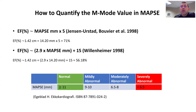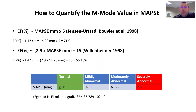Both of these results are normal EFs, but there is a spread of about 15 between them. A simpler way — instead of using either equation — is to just take the raw value of the MAPSE in millimeters itself. This approach comes from the referenced textbook.